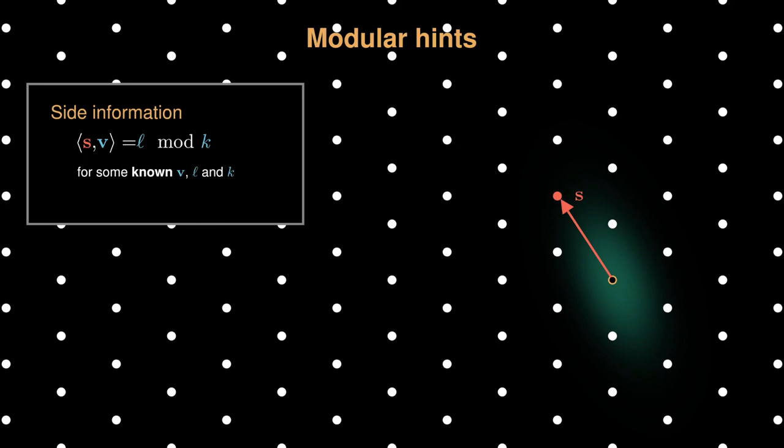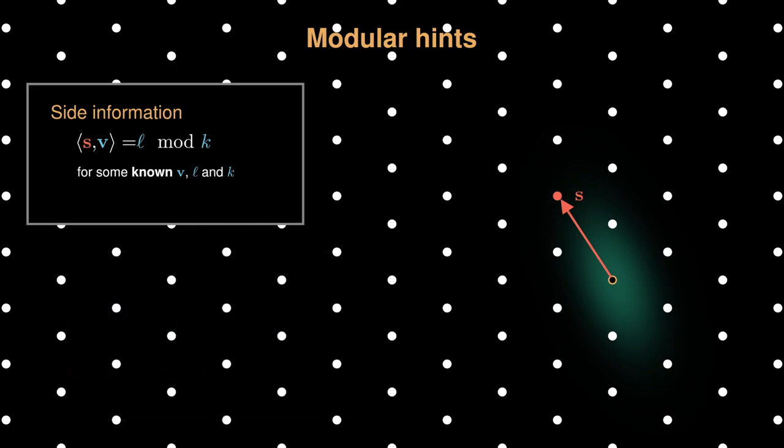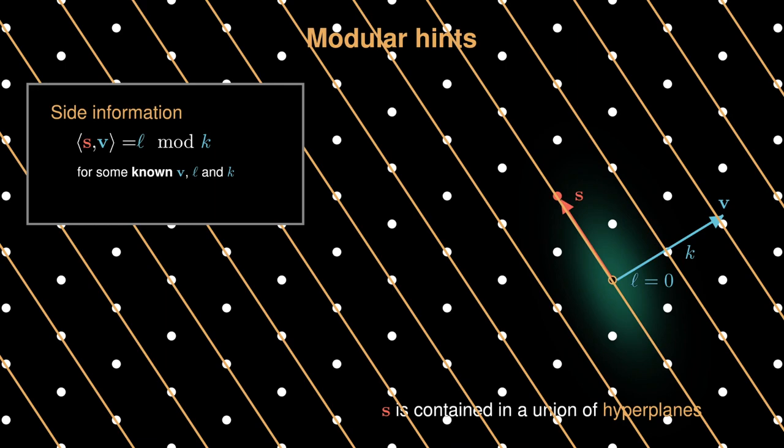Now let's look at the modular hint. Recall that modular hint has the similar form as the perfect hint. It is in the form of a linear product of a secret vector s with v, modulo an integer. For a simple two-dimensional example, let's say attacker knows that the difference between two coordinates of the secret is divisible by 3, which can be formalized as a modular hint. The geometric intuition behind the modular hint is actually very similar as the perfect hint. In which way, the modular hint equation is built as the inner product equals to L, or L plus minus k, or L plus minus 2k, and so on. And each of these possible inner product values contributes to a hyperplane that the secret lattice point may lie on.